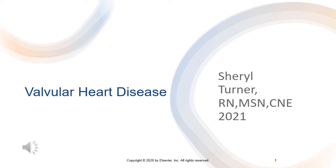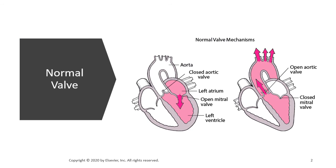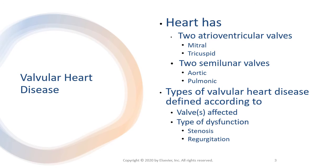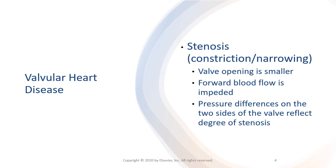Now we're going to talk about structural heart disease, focusing on the valves. There are two AV valves, the mitral and the tricuspid, and two semilunar valves, the aortic and the pulmonic, and they control the blood flow through the heart. Valvular heart disease is defined by the valves affected and the type of dysfunction: stenosis or regurgitation.